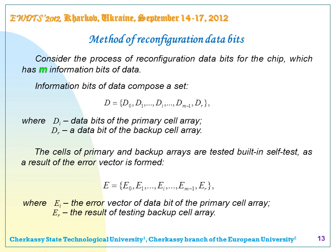Method of reconfiguration of data bits. Consider the process of reconfiguration of data bits for the chip which has M information bits of data. Information bits of data compose a set where DI represents the data bits of the primary cell array and DR represents the data bits of the backup cell array. The cells of primary and backup arrays are tested by built-in self-test, as a result of which an error vector is formed, where EI is the error vector of data bits of the primary cell array and ER is the result of testing the backup cell array.